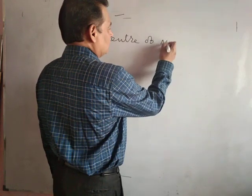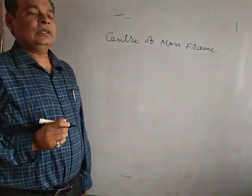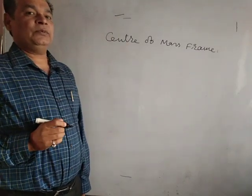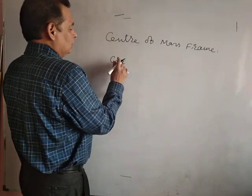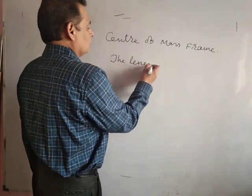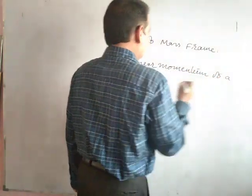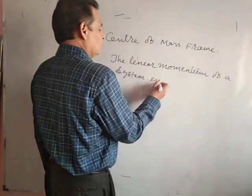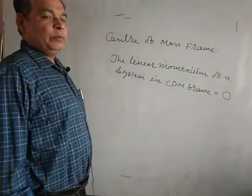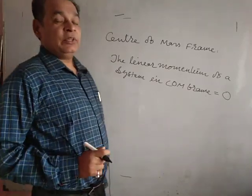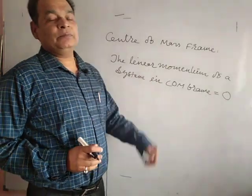Center of mass frame — that's a very popular frame. It makes questions easier with respect to other frames of reference. First, know one thing: in this frame, the linear momentum of a system in the center of mass frame is zero. Linear momentum becomes zero. The entire system has zero linear momentum in the center of mass frame.